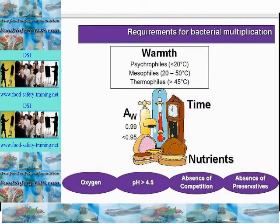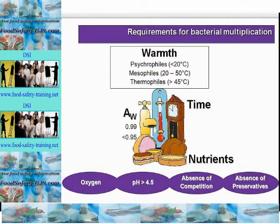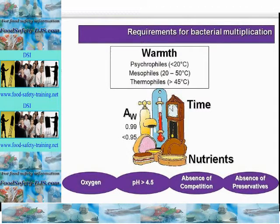Bacteria also require moisture — here we are looking at water activity, the available water. Pure water has an aw of 1.00. Water is needed to transport nutrients and waste, and the bacteria's preferred range is 0.99 to 0.95. Some foods don't have enough available water for growth. Some bacteria can survive dehydration as spores, which we will cover later. Staphylococcus aureus can survive relatively high salt levels and is sometimes written as a halophile.